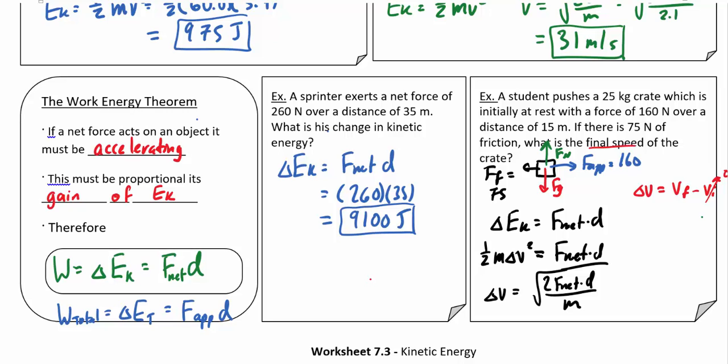Subbing in all our values, we get the square root of 2 times 160 minus 75 is 85, times a distance of 15 meters, divided by a mass of 25 kilograms. So our final speed is going to be 10 meters per second.